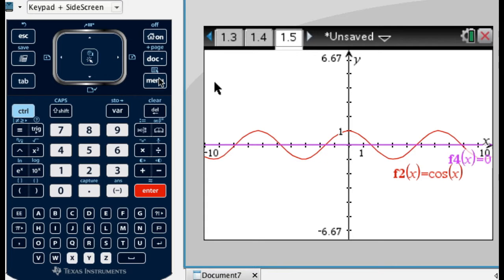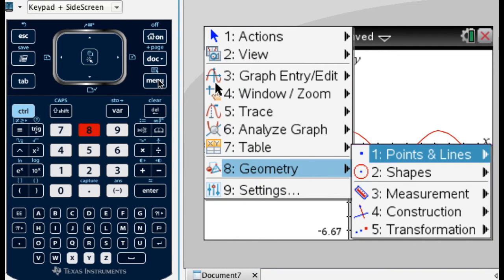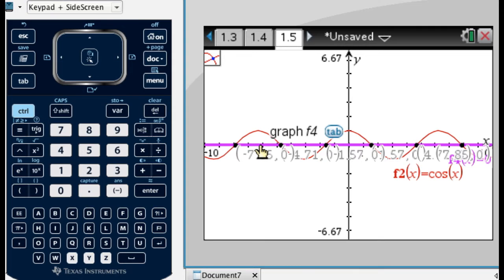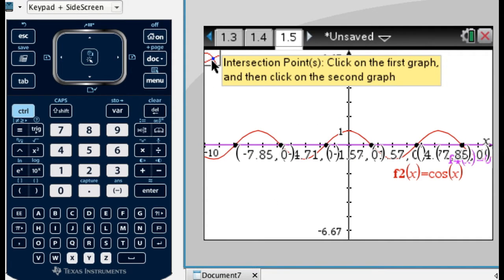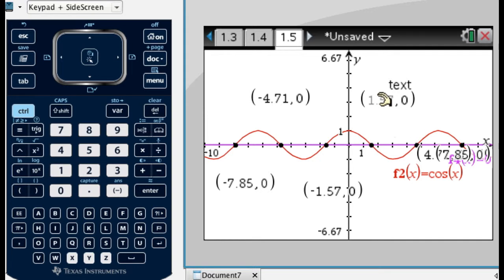And then I'm going to use the famous combination of menu 8 for geometry, 1 for points and lines, 3 for intersection points. Click on the first graph, click on the second graph, and they all show up. And now you can see this tool is still here, so I'm going to press Escape to get out of it. I'm going to click and drag so that I can actually see them.